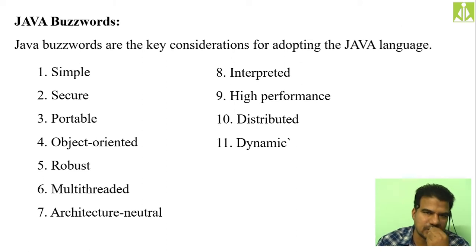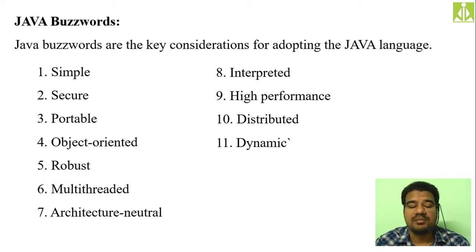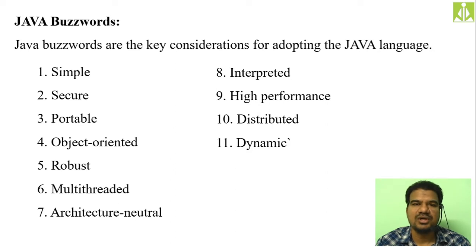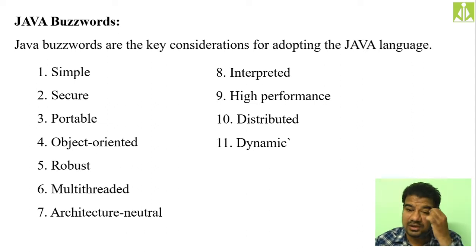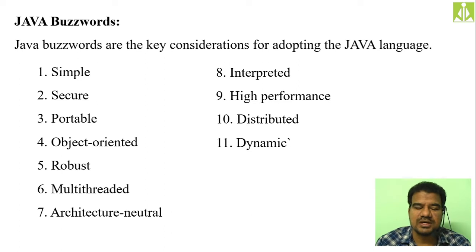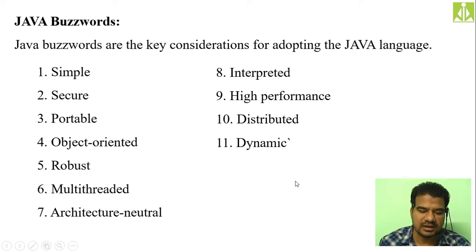Then we started the concept of buzzwords. We said buzzwords are the important considerations for choosing Java programming language for software development. So if somebody asks you why you are going for Java programming, you have to give these explanations. In these 11 buzzwords we already discussed like 'simple' — the reason for calling Java as simple.